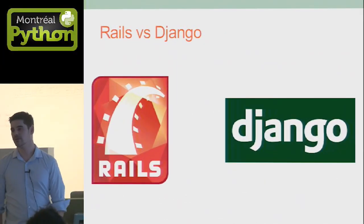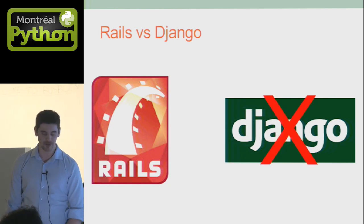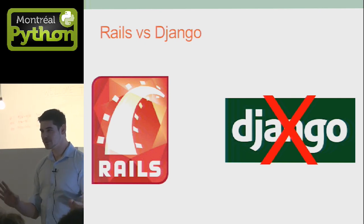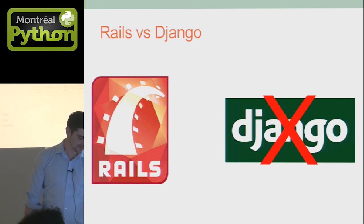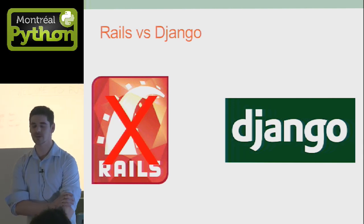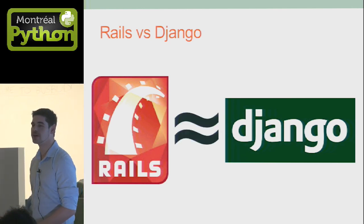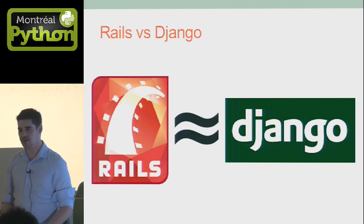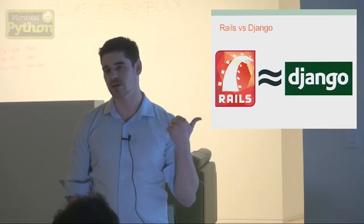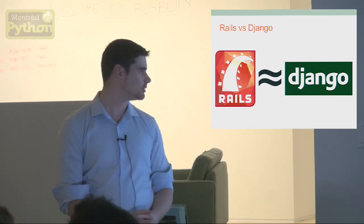Rails versus Django. The first thing I want to say is that if you know Rails, you really don't need to know Django. I say that because if you know Django, you don't need to know Rails either — so that's pretty much equal. For me, both frameworks are equivalent. They do pretty much the same thing. If you prefer Python, use Django. If you prefer Ruby, use Rails. That's pretty much the trick.